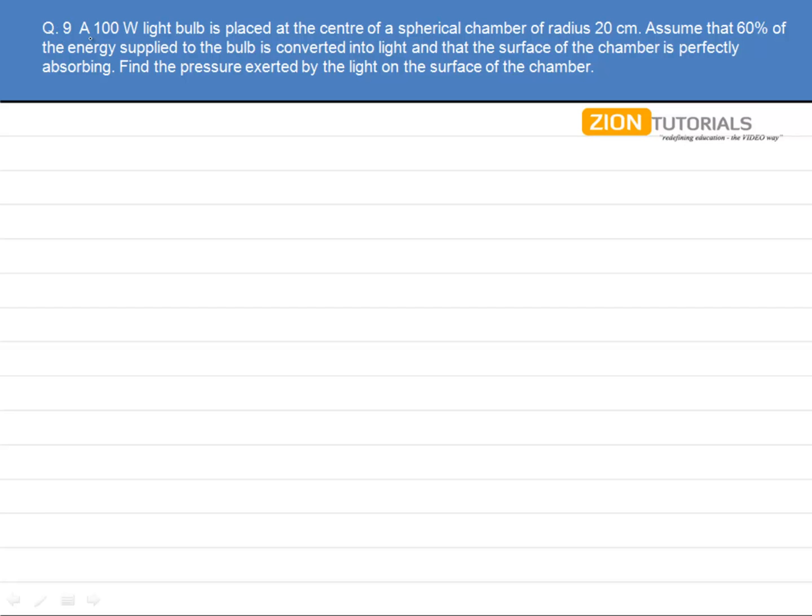As the question says, a 100 watt light bulb is placed at the center of a spherical chamber of radius 20 centimeters. Assume that 60% of the energy supplied to the bulb is converted into light and the surface of the chamber is perfectly absorbing. Find the pressure exerted by the light on the surface of the chamber.